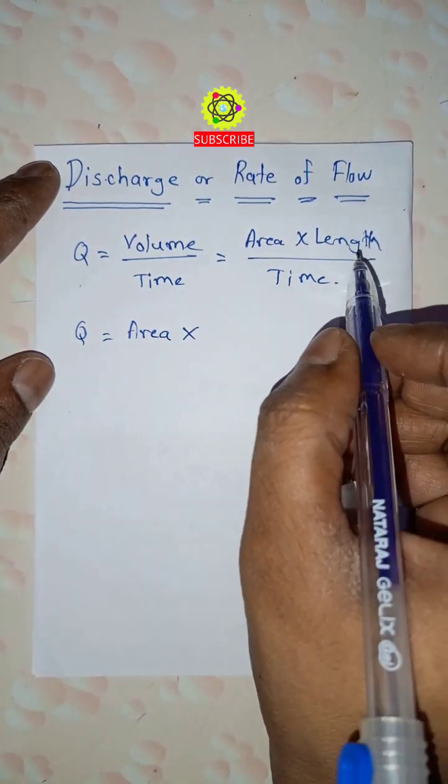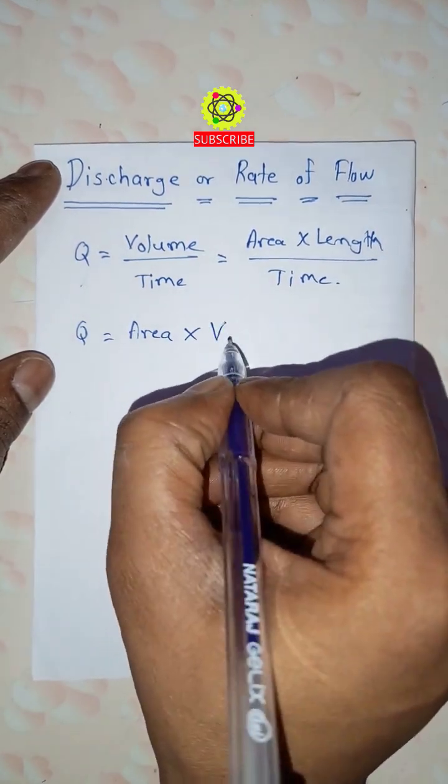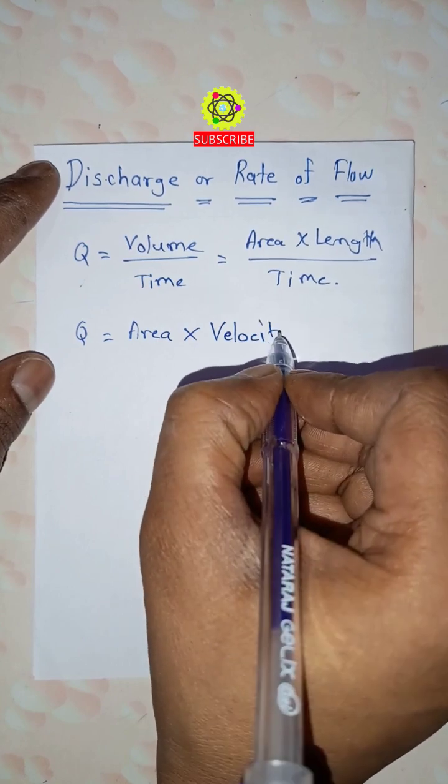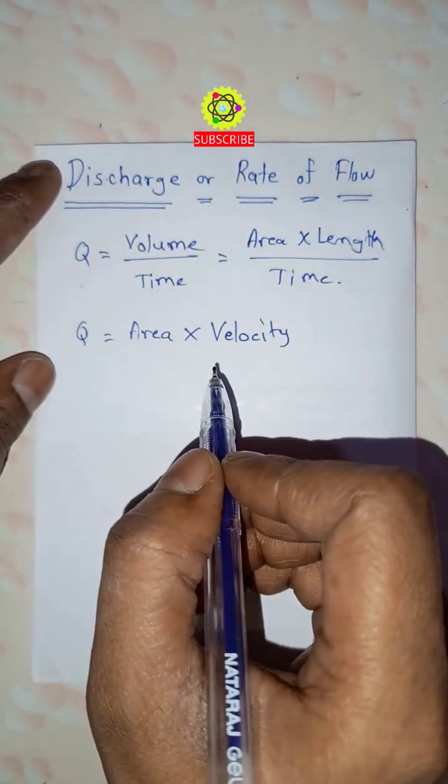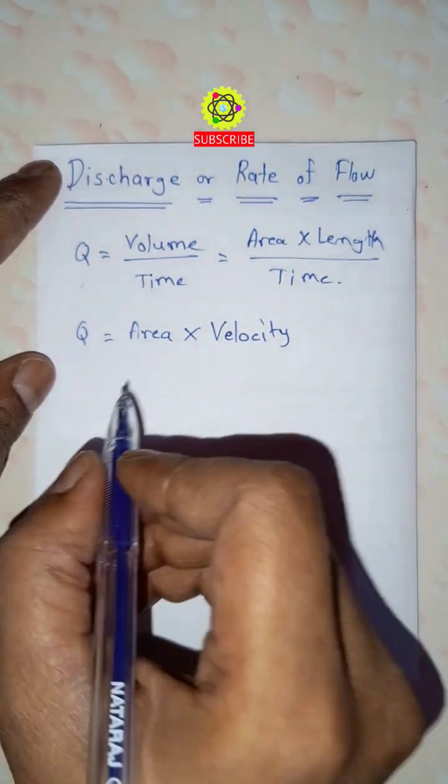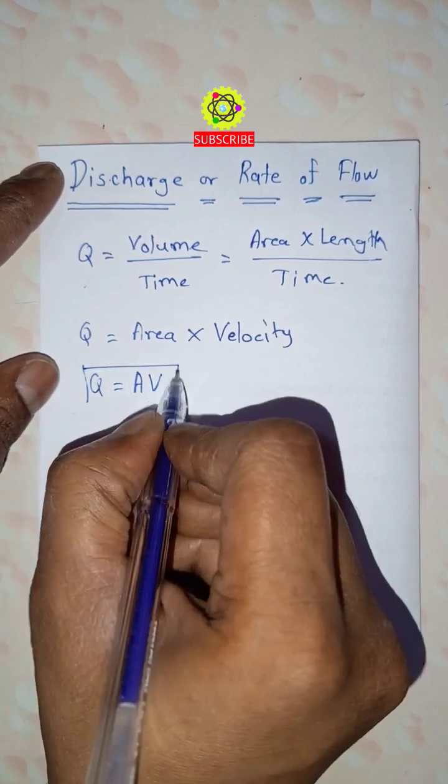Here we can write down as velocity. Velocity is equal to distance upon time, that's why it is here velocity. So now this Q is equal to A V. This is the equation for discharge or rate of flow.